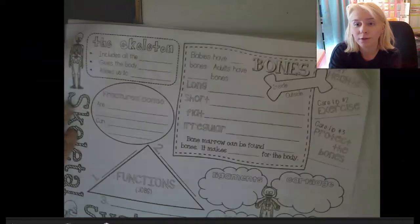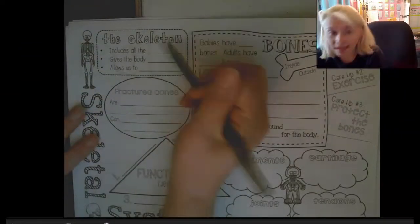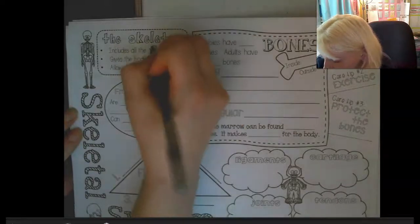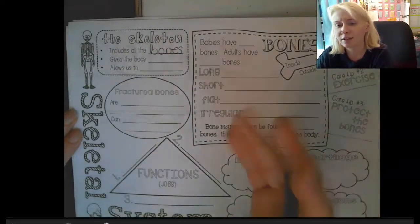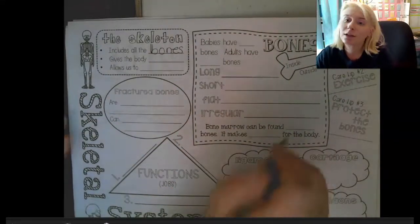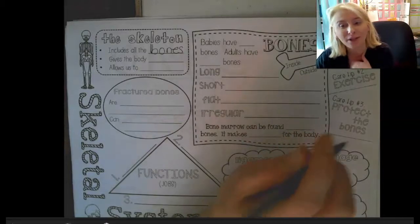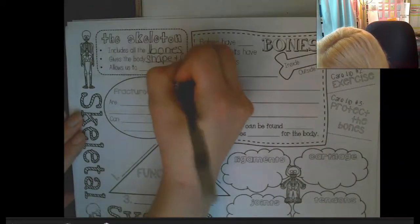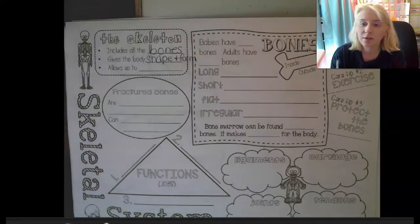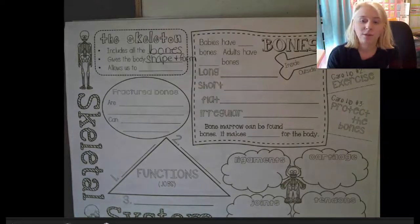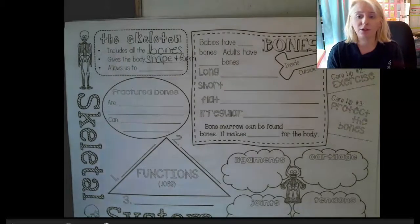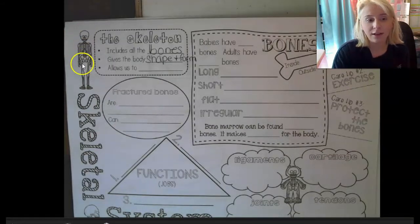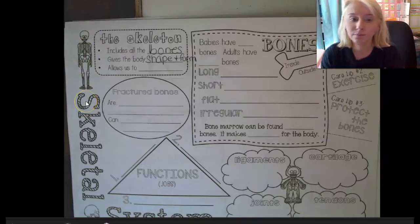So the skeleton includes all the bones. As I write, you're writing too. You can color this later — it definitely looks like something that should be colored. The skeleton gives the body its shape and form. Without our bones we would just be like a blob, falling to the ground like a sack of potatoes with no shape.